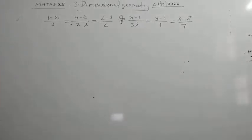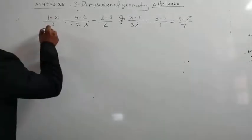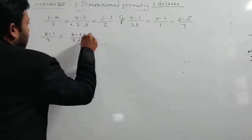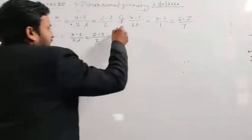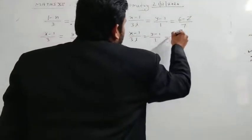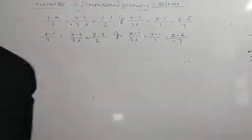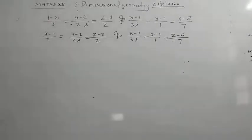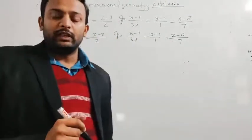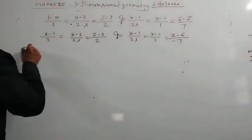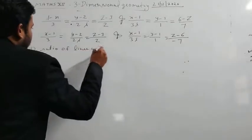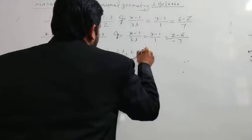We take the negative sign and rewrite the first line as (x minus 1)/(-3), (y minus 2)/(2 lambda), (z minus 3)/2. The second line is (x minus 1)/(3 lambda), (y minus 1)/1, (z minus 6)/(-7). So the direction ratios of the two lines are (-3, 2 lambda, 2) and (3 lambda, 1, -7).